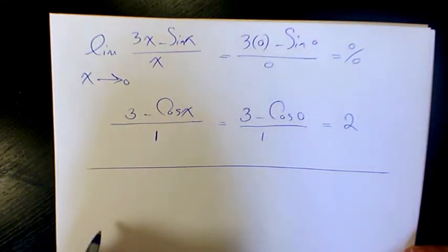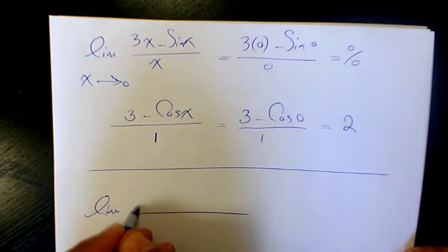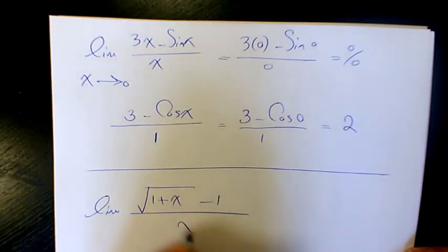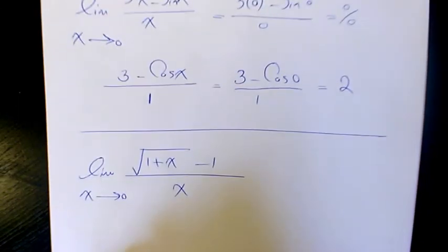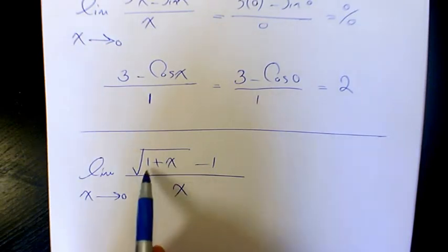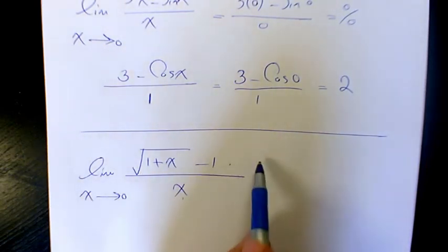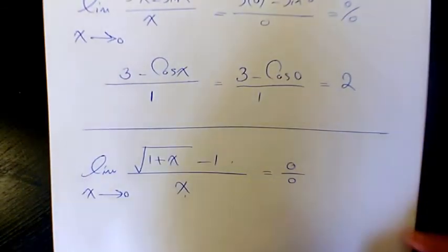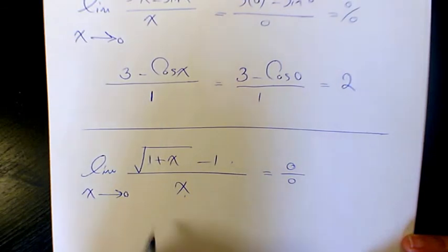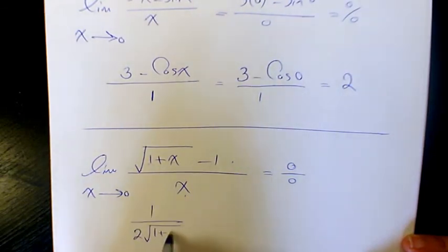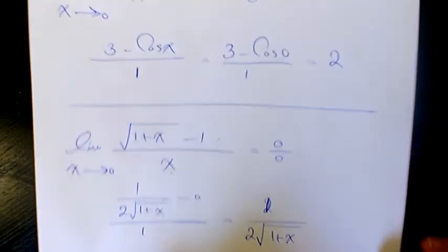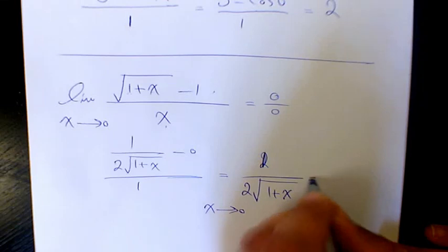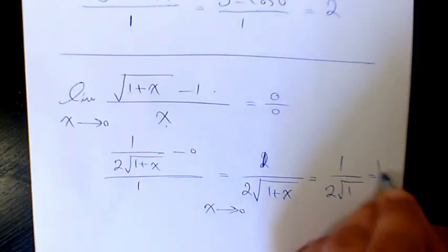Another example: limit of [√(1+x) - 1] over x when x approaches 0. Again, when you substitute x, it's (1 - 1) over 0, which is 0 over 0. So we need to use L'Hôpital rule. The derivative of √(1+x) is 1 over (2√(1+x)), minus 0 over 1. That's 1 over (2√(1+x)). When x approaches 0, it's 1 over 2√1, which equals 1 over 2.